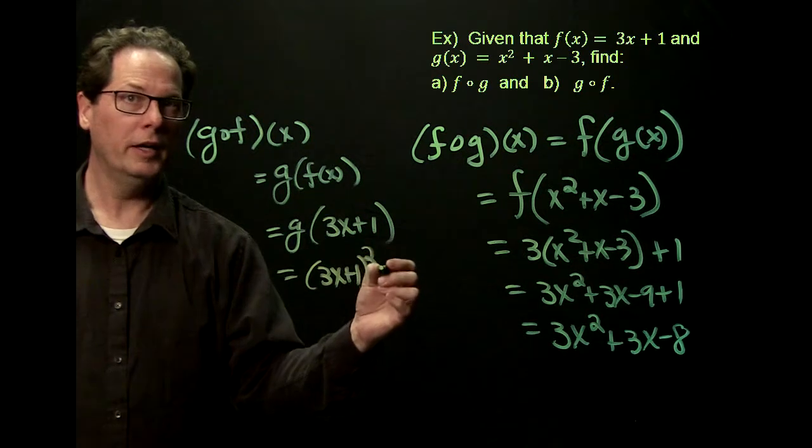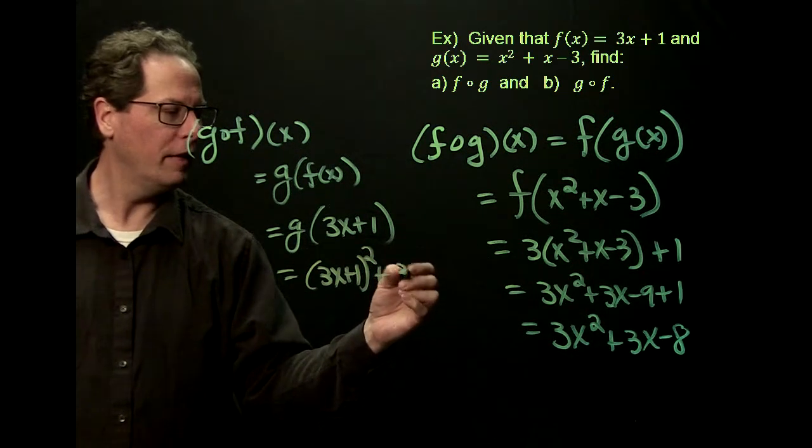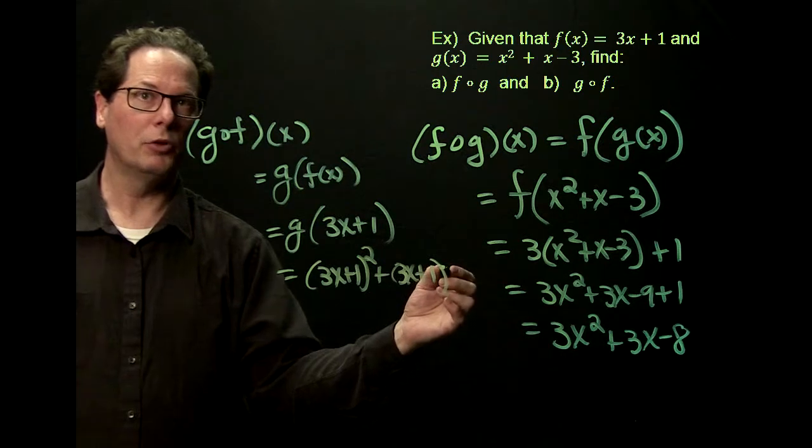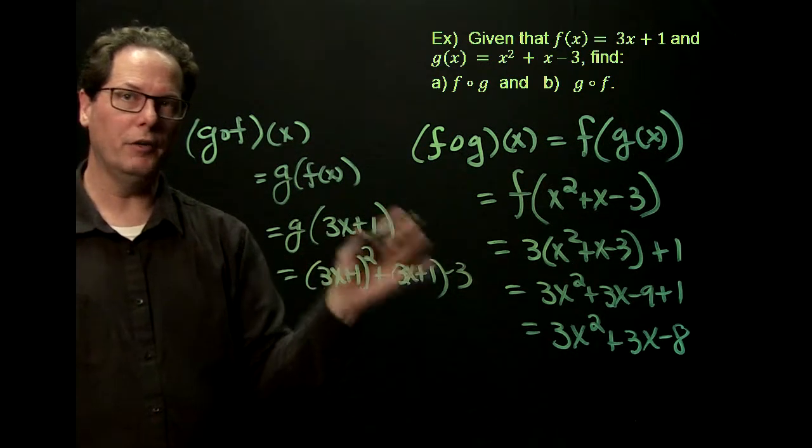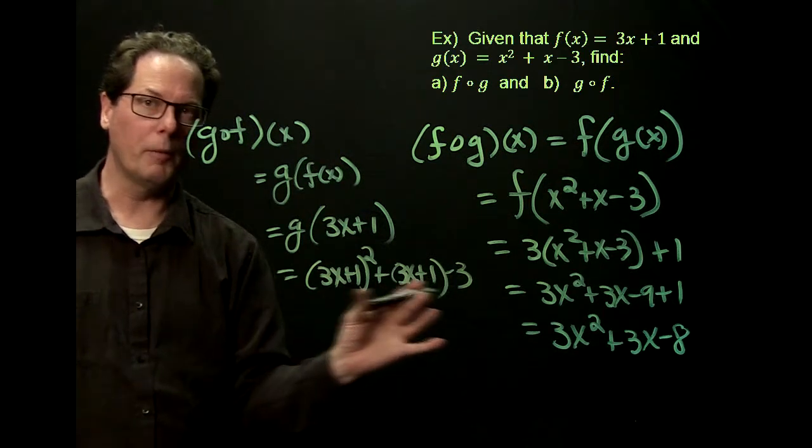It squares it, it adds that number, 3x plus 1, and then it subtracts 3. So this is g of 3x plus 1, this is our composite function.